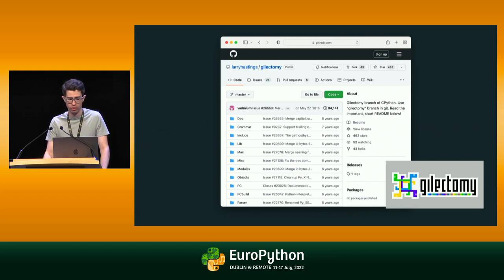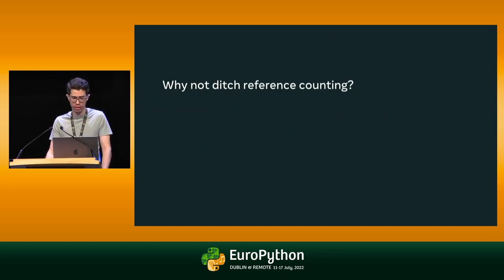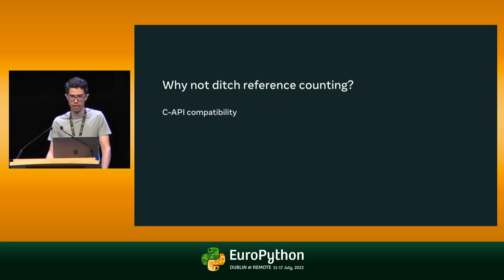Reference counting is by no means the only issue you have to address when removing the GIL, but it's essentially the first problem you have to solve because the performance impact is so large. A number of people have concluded that reference counting is the biggest obstacle to removing the GIL, and that we should ditch it and replace it with a tracing garbage collector. The primary reason not to is that getting rid of reference counting would make it much harder to get a reasonable degree of compatibility with existing C API extensions.